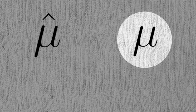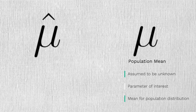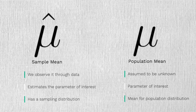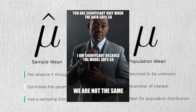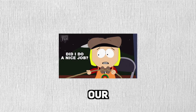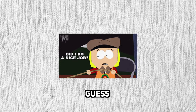Let's get these values straight. This is the population mean — it's unknown, but it's the thing we're trying to learn about. This is the sample mean: we gathered IQ data from 20 YouTubers and took the average. I have to stress that these two are not the same thing. One thing estimates the other. But is our estimate or guess good?